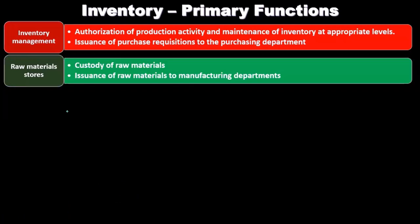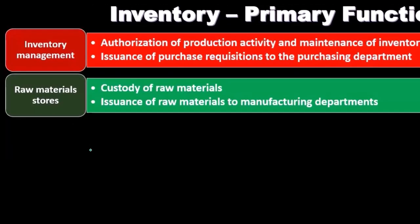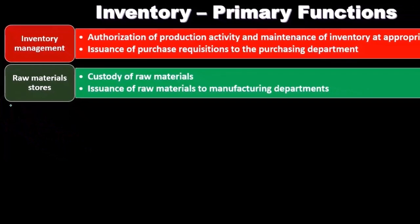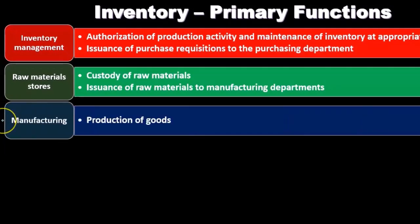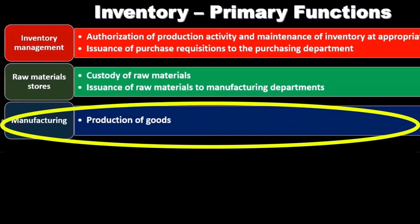As we go through these functions, we want to consider what risks are involved — the inherent risk — and what internal controls might be put in place. How can we test for internal controls as the auditor? We'll perform tests of internal controls and then substantive procedures related to these as well. Then we have manufacturing as the next primary function.